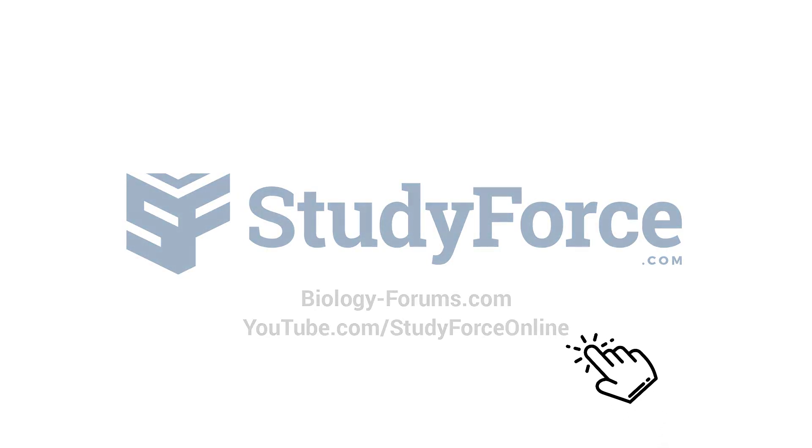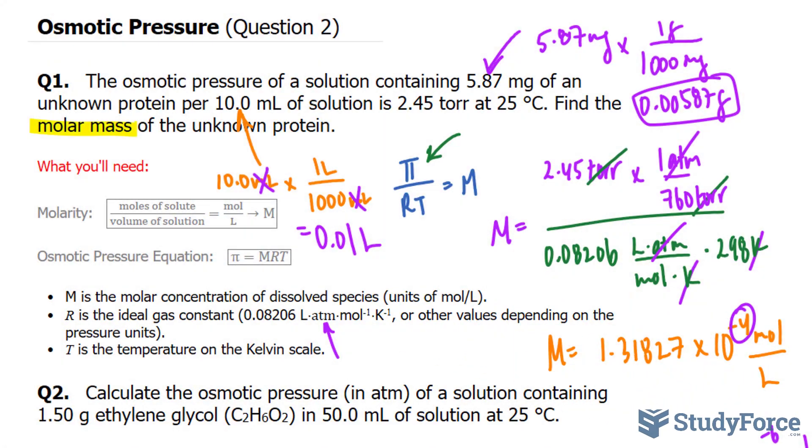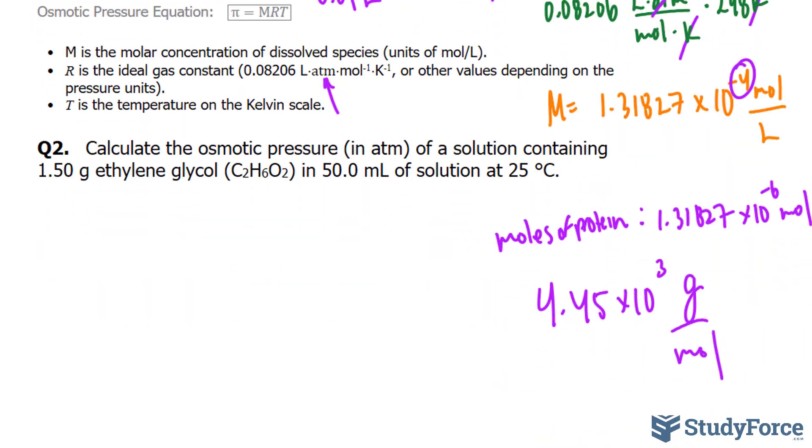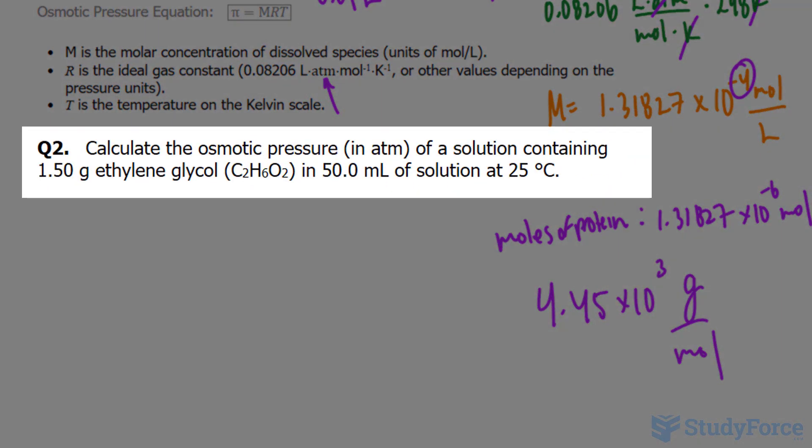Welcome back to question 2 of this series where we discuss and calculate osmotic pressure. We ended off with question number 2, which reads: Calculate the osmotic pressure in atmospheres of a solution containing 1.50 grams ethylene glycol in 50.0 milliliters of solution at 25 degrees Celsius.